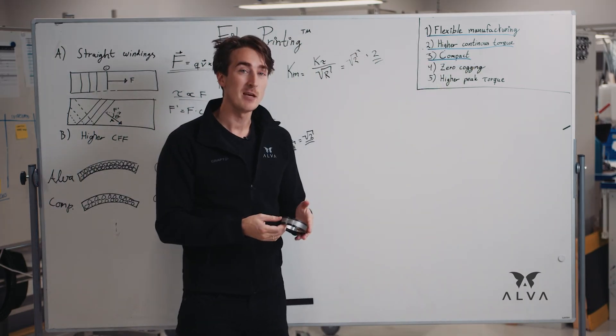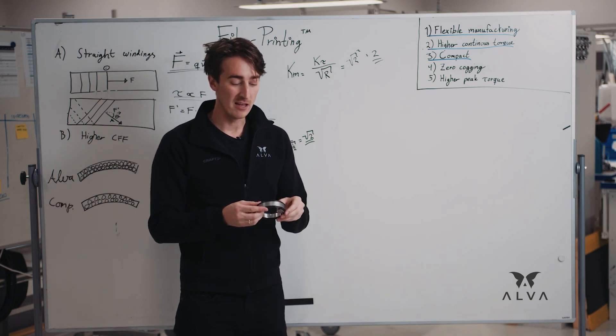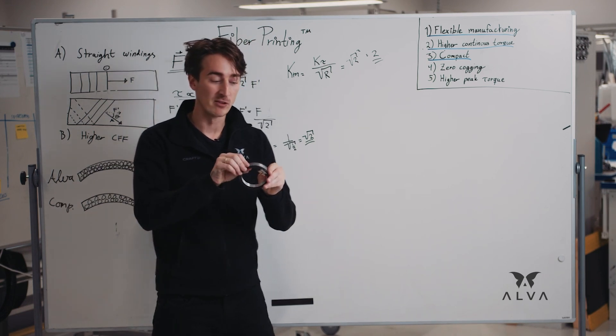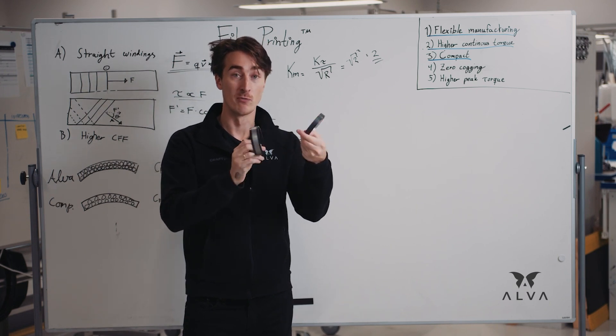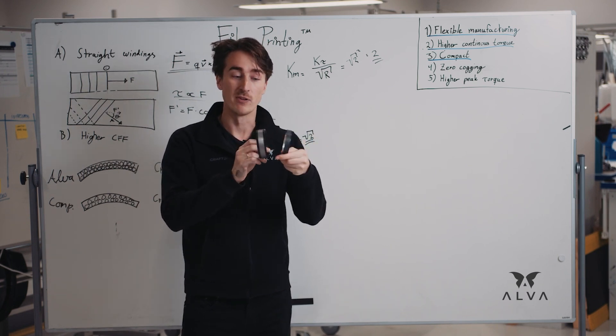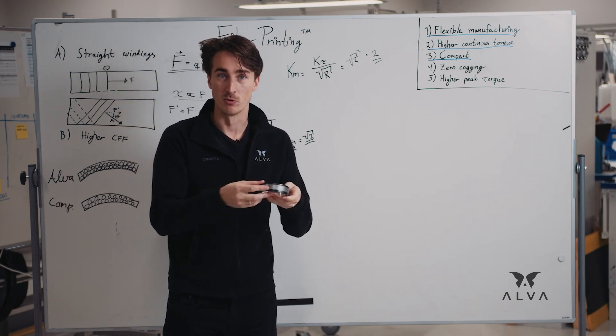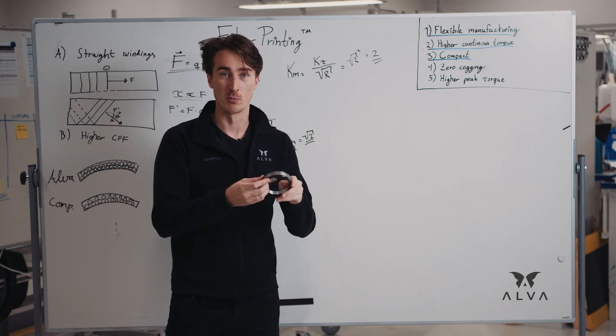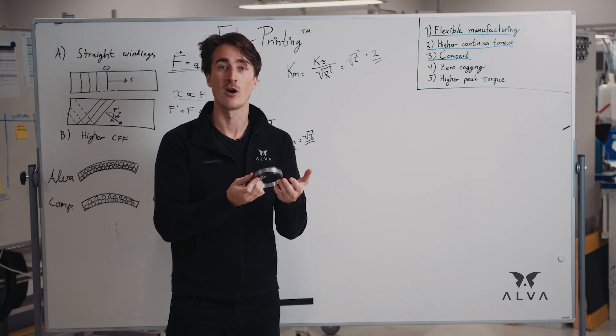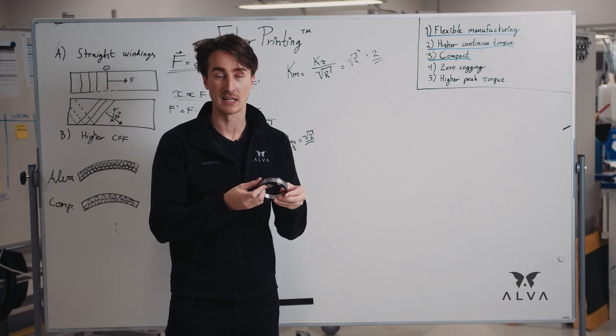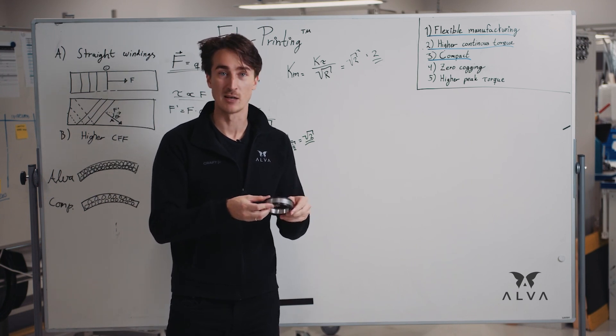Thirdly, one of the key benefits of Alva's slotless motors is the high inner diameter as you can see on this motor, which even contains the rotor. The main reason for this is because we remove the iron in the teeth, there's no slots, and also the high copper fill factor, which enables engineers to integrate our motors into the application with either drives or gears or anything they might fancy.